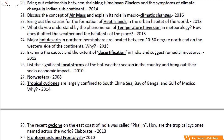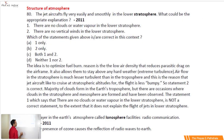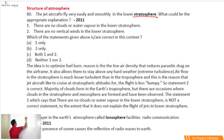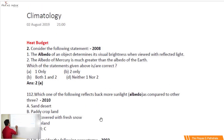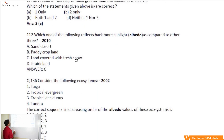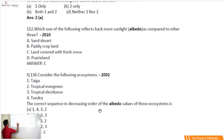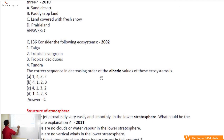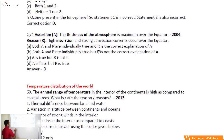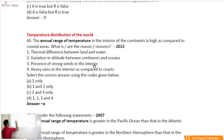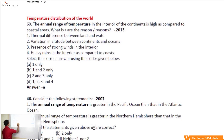Now let us proceed ahead with the UPSC prelims section. Questions have come on the structure of the atmosphere — the troposphere — and on the heat budget. Question number 2 talks about the heat budget and albedo. Similarly, question number 112 and question number 136 again talk about albedo. One topic is the structure of the atmosphere; another is the heat budget. Then the next is the temperature distribution of the world — very fundamental questions come from these sections.